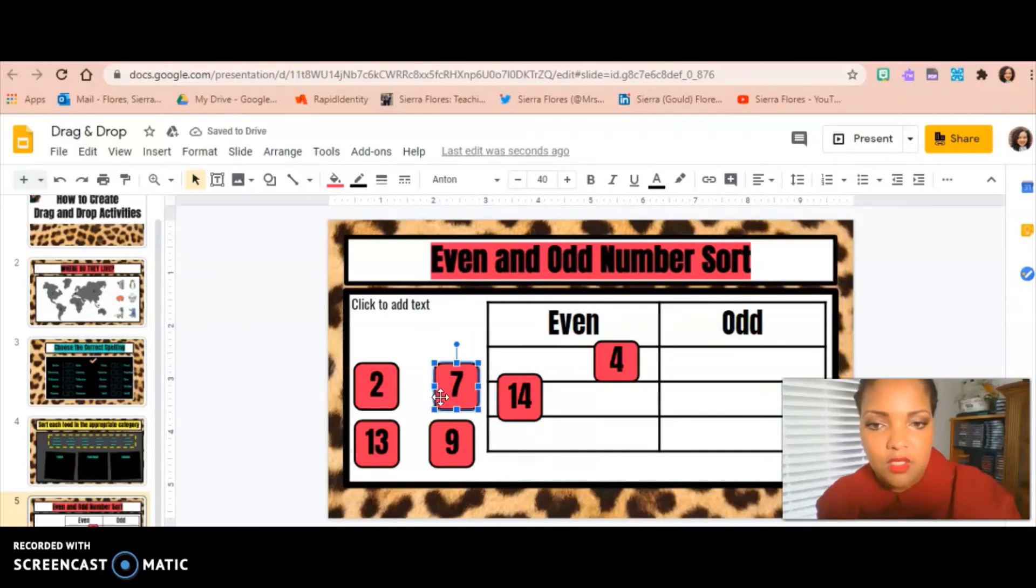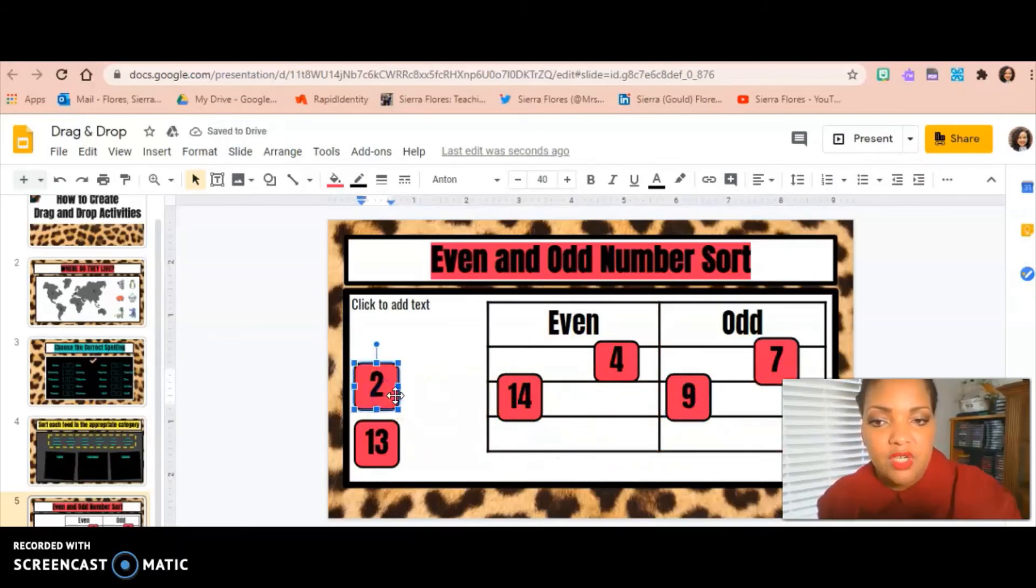Seven is odd. So I'm going to drag it over to the odd side. And then I'm going to continue this until I finish. And then after I finish, I will have a completely sorted table and all my numbers are in the right spot.